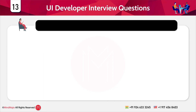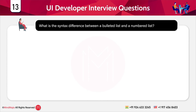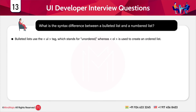The next question is: what is the syntax difference between a bulleted list and a numbered list? A bulleted list uses the ul tag, which stands for unordered list, whereas a numbered list uses ol, which stands for ordered list. That covers the UI developer interview questions section, and now we move to the front-end developer questions.